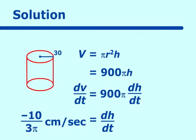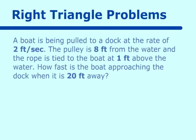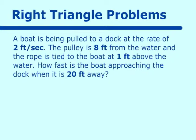These first two problems are relatively simple because we've just taken the derivative using the formulas we have. Let's go on to something a little more difficult — a right triangle type of problem. A boat is being pulled to a dock at the rate of two feet per second. The pulley is eight feet from the water, and the rope is tied to the boat at one foot above the water. How fast is the boat approaching the dock when it is 20 feet away?